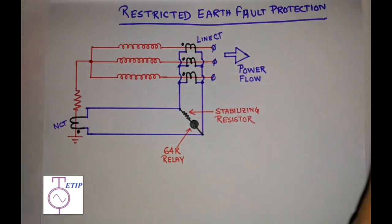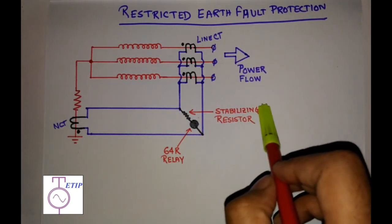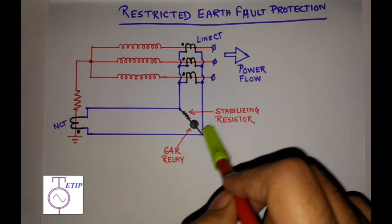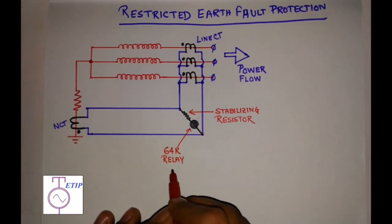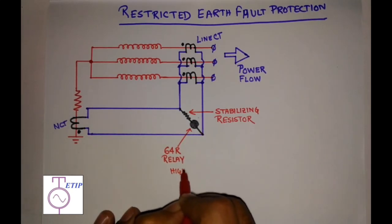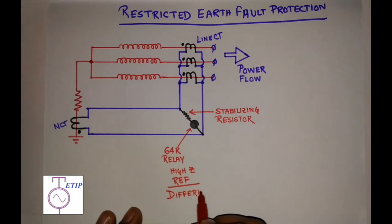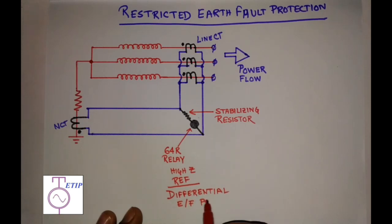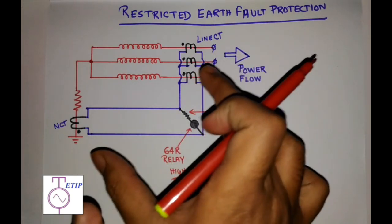The stabilizing resistor prevents the relay from tripping under any fault outside of the protective zone. If this type of resistor is used in the relay circuit, the protection is called high impedance restricted earth fault protection — also referred to as high impedance REF or high-Z REF. Also remember that restricted earth fault protection is a differential earth fault protection, so it works on the principle of the current difference between two CTs.